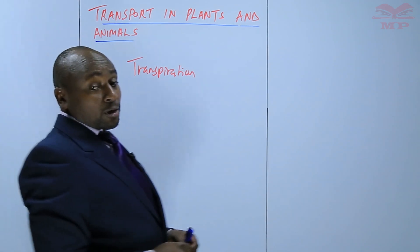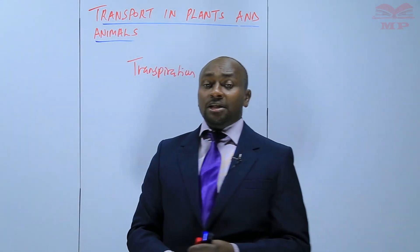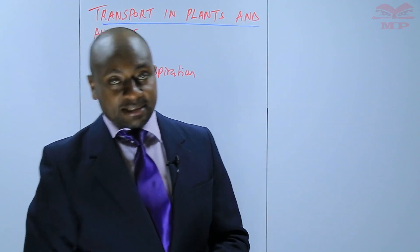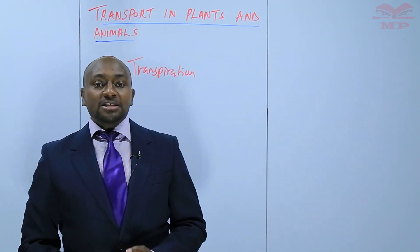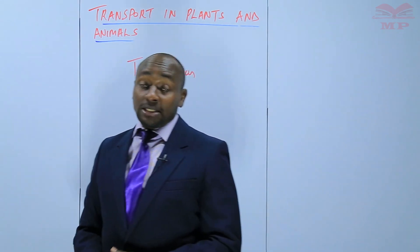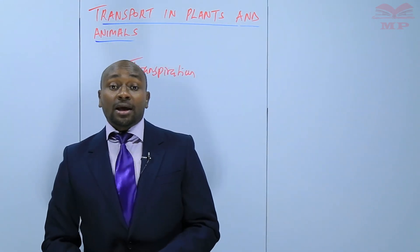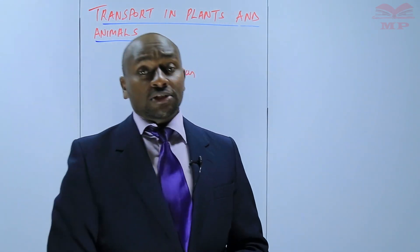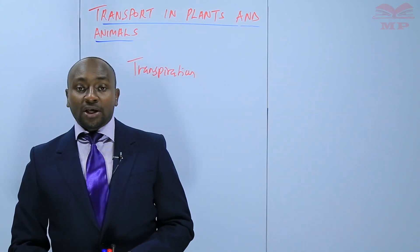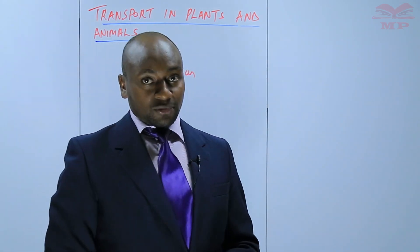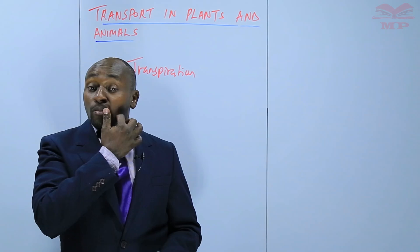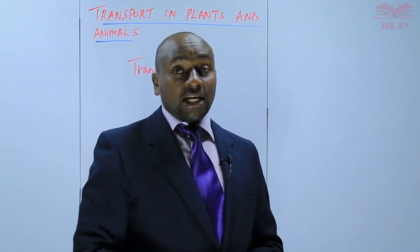First of all, we know that transpiration is a process that occurs in plants. And this process entails plants losing water, and this water is lost in form of water vapor to the atmosphere. So the plants lose water in form of water vapor to the atmosphere.